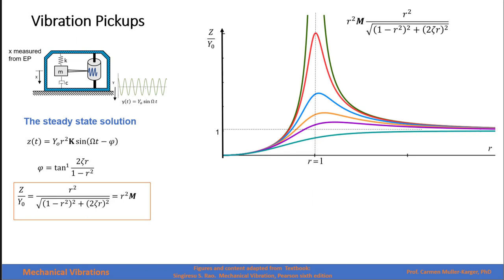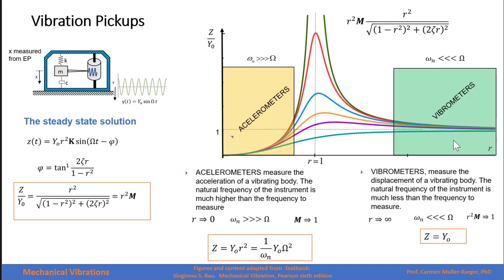Now that we are familiar with this response, where we get the graph of r squared times the magnification factor, let's relate this to the different types of instruments. We have mainly two types: vibrometers, which measure displacement of the vibrating body. The natural frequency of the vibrometer instrument is much smaller than the frequency of vibration we are trying to measure — we work for very high values of r, at least r greater than 3 or 4. For those values, r squared times M tends to one. Therefore, what we are measuring, which is z, will be exactly equal to y. Vibrometers measure displacement.